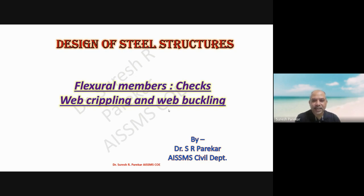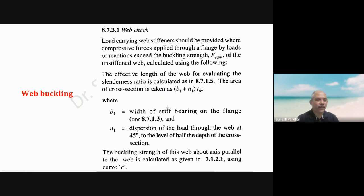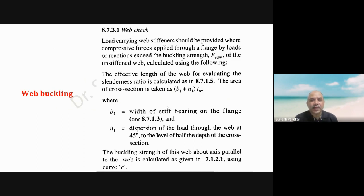We will see these two checks. First, we have web buckling. According to clause number 8.7.3.1, we have a load-carrying web stiffener. This is for web buckling. A stiffener should be provided where compressive forces are present. If the condition is not satisfied, then we have to provide the stiffener.